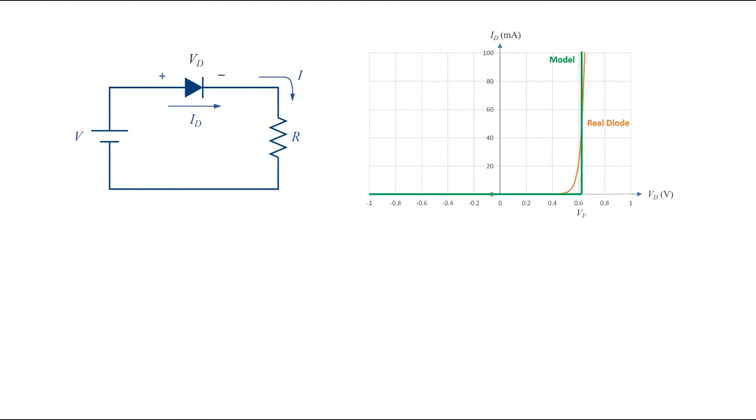The ideal diode is the special case of this model, where the forward voltage has been assumed as 0.